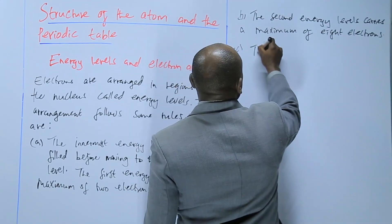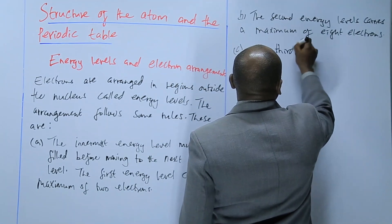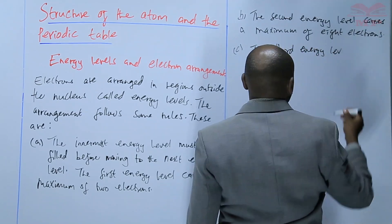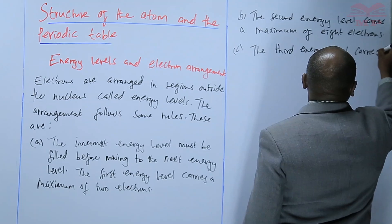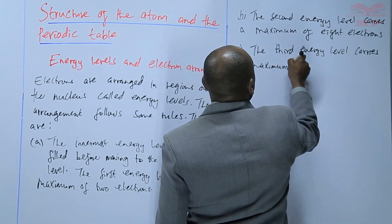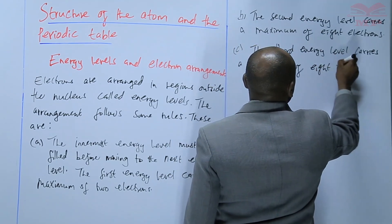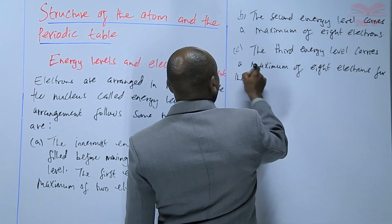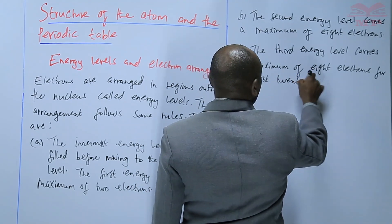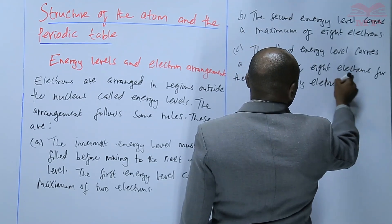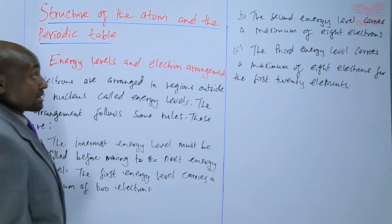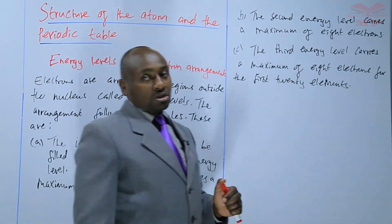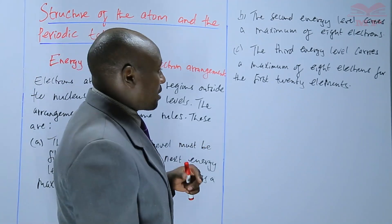The third energy level also has its maximum. It carries a maximum of eight electrons for the first twenty elements. We will discuss later which are these first twenty elements, but for those first twenty elements, the third energy level cannot exceed a maximum of eight.